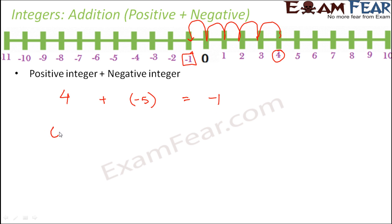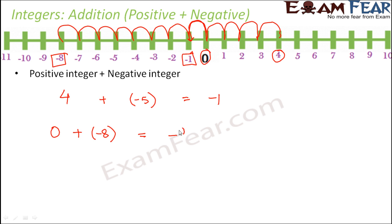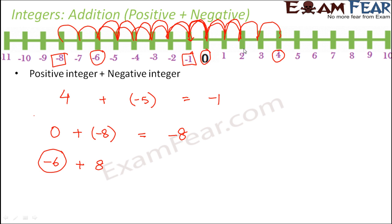Let us take another example: 0 plus minus 8. The given integer is 0, and since we are adding a negative integer, we move left 8 steps — 1, 2, 3, 4, 5, 6, 7, 8 — reaching minus 8. Now let us try minus 6 plus 8. The given integer is minus 6, and we add a positive number, so we move right — 1, 2, 3, 4, 5, 6, 7, 8 — reaching 2. So minus 6 plus 8 equals 2.